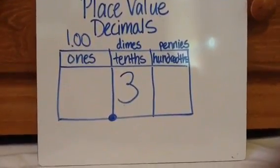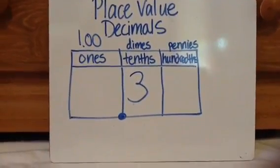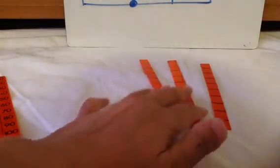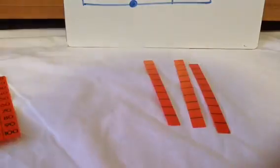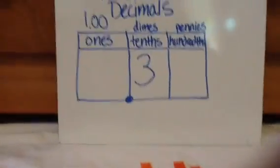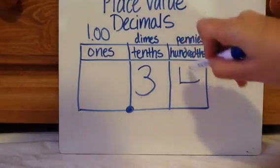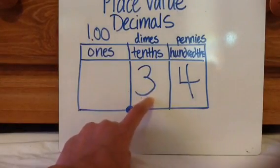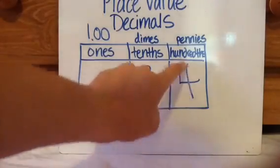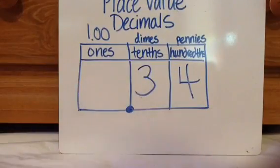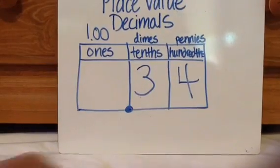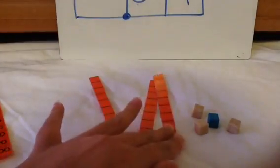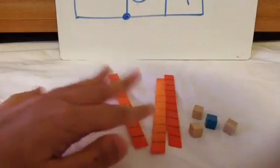Suppose I have three tenths — the way to represent it would be to use three tenths blocks. Now let's say I had three tenths and four hundredths, which is 34 hundredths by the way. That's like saying I have three of these tenths sticks and then four of these hundredths cubes. So when you put it together: 10, 20, 30, 31, 32, 33, 34 — so 34 hundredths. Keep in mind that ten of these little cubes fit in one tenths stick.